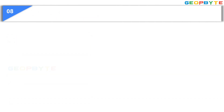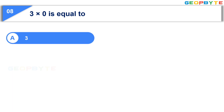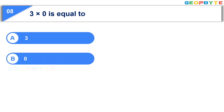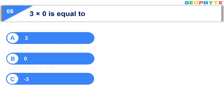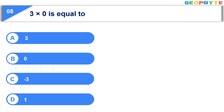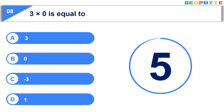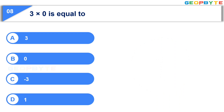The eighth question: 3 multiplied by 0 is equal to — Option A: 3. Option B: 0. Option C: minus 3. Option D: 1. Your time starts now. Your time is up. And the correct answer is Option B: 0.